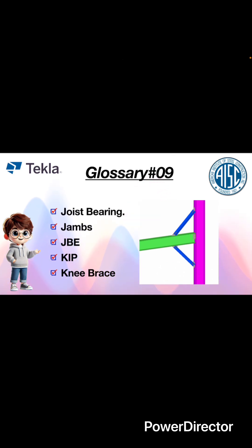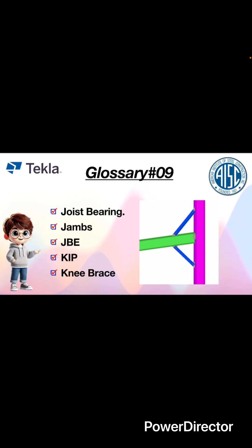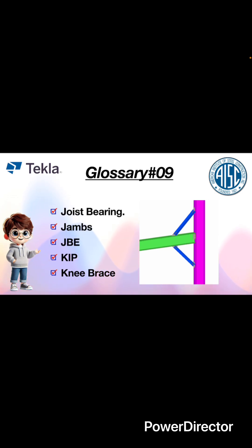Knee brace is connected to a column and its connecting beam. If you can see this picture, the blue colored ones are knee braces. Usually, at conditions where a beam has a fixed connection at one end and the other end is free, we provide these knee braces.